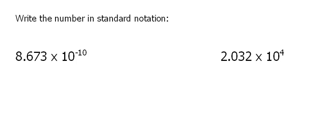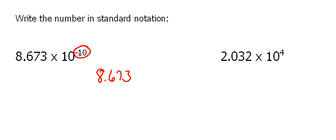So we're going to write the number out as it really and truly is. The way I like to start is just to write our number down: 8.673. Now when we multiply by 10 to the negative 10th, that exponent tells us how many decimal places we have to move. Because it's a negative number — when we multiply by 10 to a negative power, that means we're going to have a very, very tiny number. So to make this number smaller, we move our decimal to the left 10 spaces.